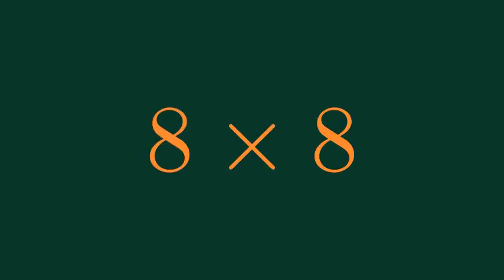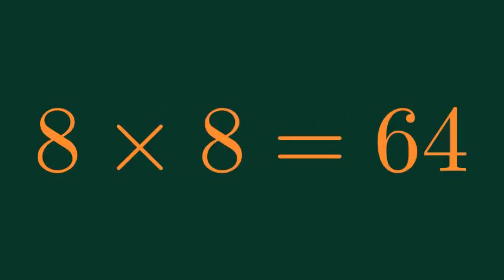What is 8 times 8? 8 times 8 is equal to 64.